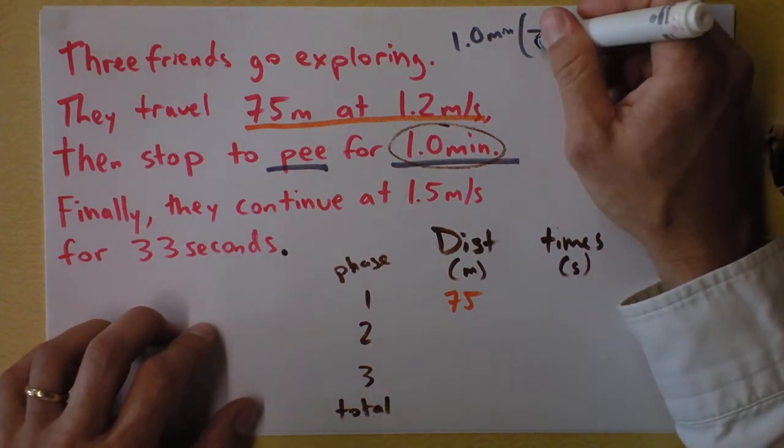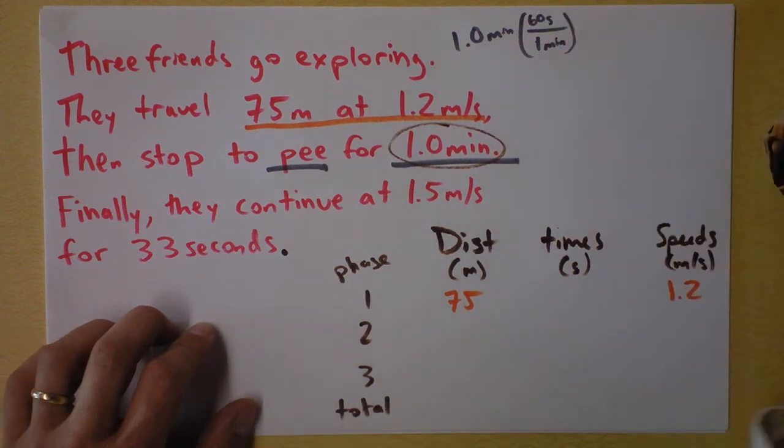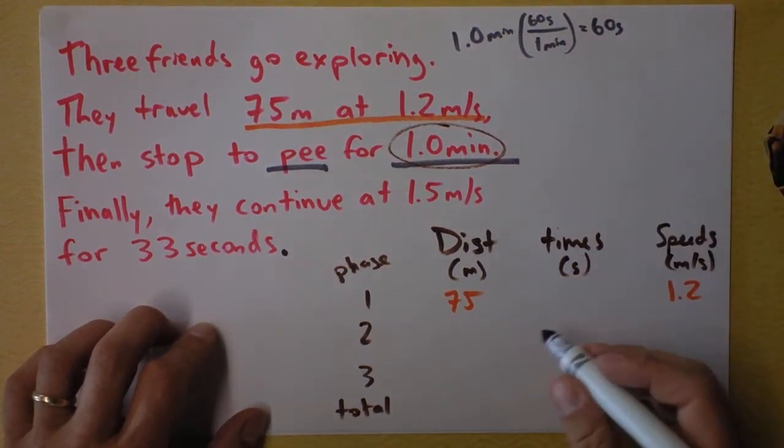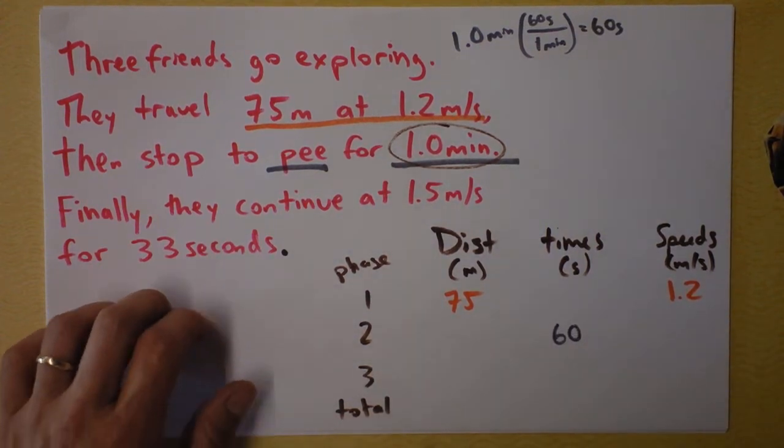I'm really making this overly complicated here. I'm going to put one minute in the denominator and 60 seconds in the numerator and find that this is going to be equal to 60 seconds. Look at that, boy, was that complicated. And I put that in phase two for a 60 second run right there.